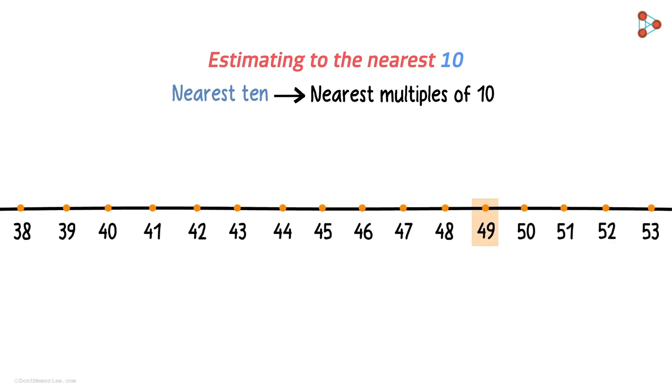Let's round off the number 49 to the nearest 10. What is the multiple of 10 which is nearest to 49? Yes, it's 50. So we can say that 50 is a good estimation of 49 to the nearest 10.